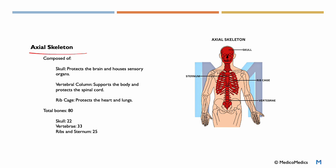We have the axial skeleton, which is composed of the skull which protects the brain and houses sensory organs. We have the vertebral column which supports the body and protects the spinal cord. It goes all the way here. We have the ribcage which protects the heart and lungs. In total, we have 80 bones. When we're talking about the axial skeleton, we have 22 in the skull, 33 in the vertebra, and 25 in the ribs and sternum.